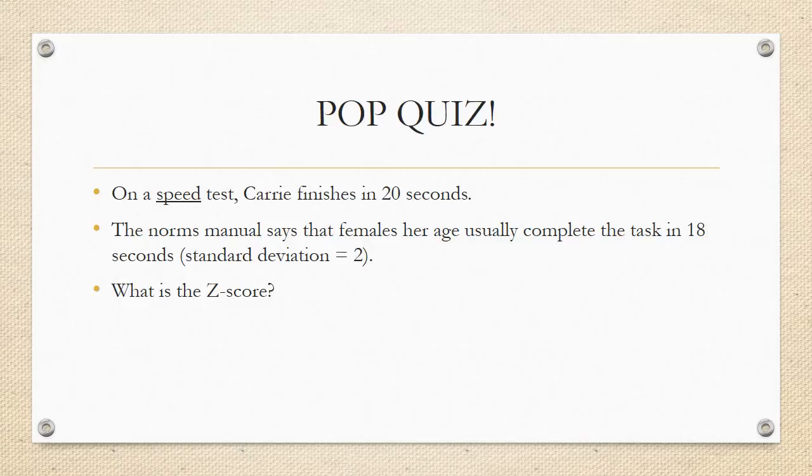Pop quiz time! On a speed test, Carrie finishes in 20 seconds. The norms manual says that females her age usually complete the task in 18 seconds with a standard deviation of 2 seconds. So, what is the z-score?